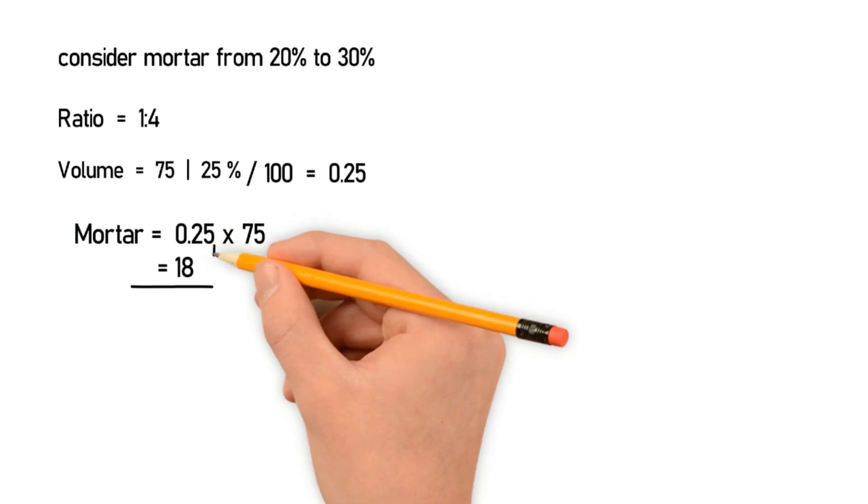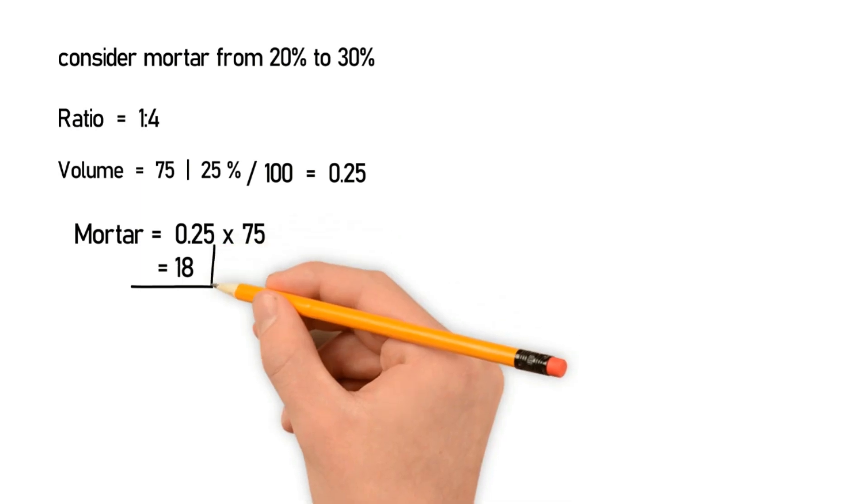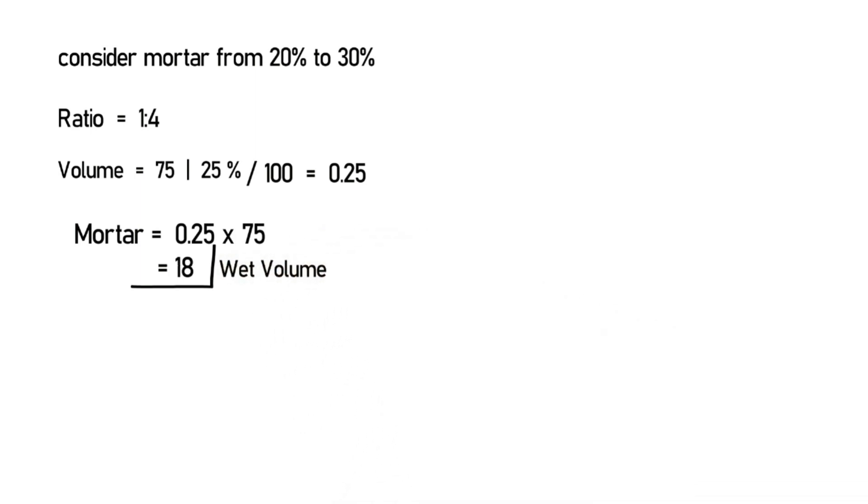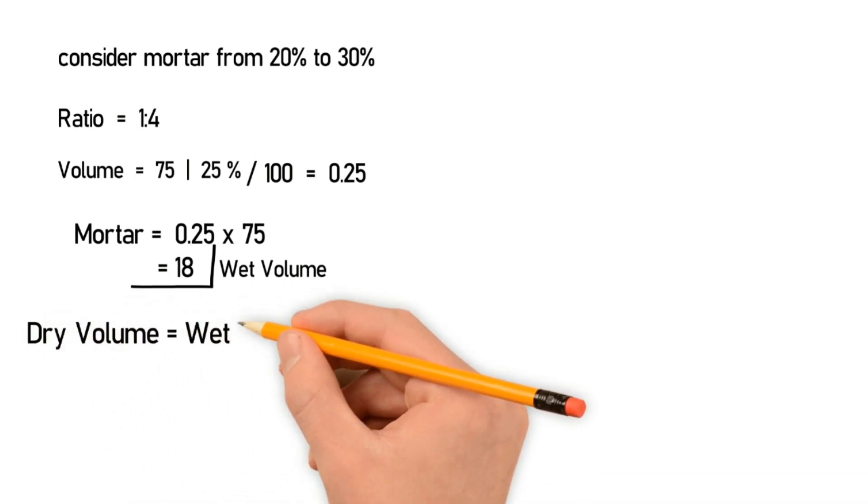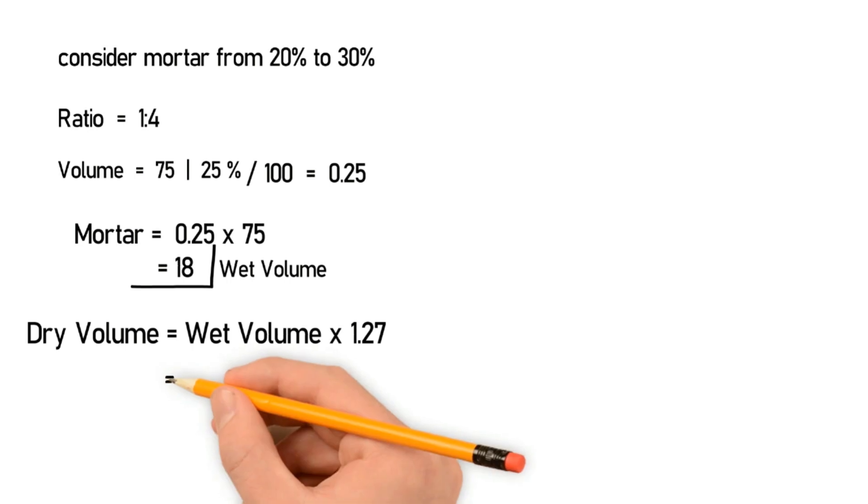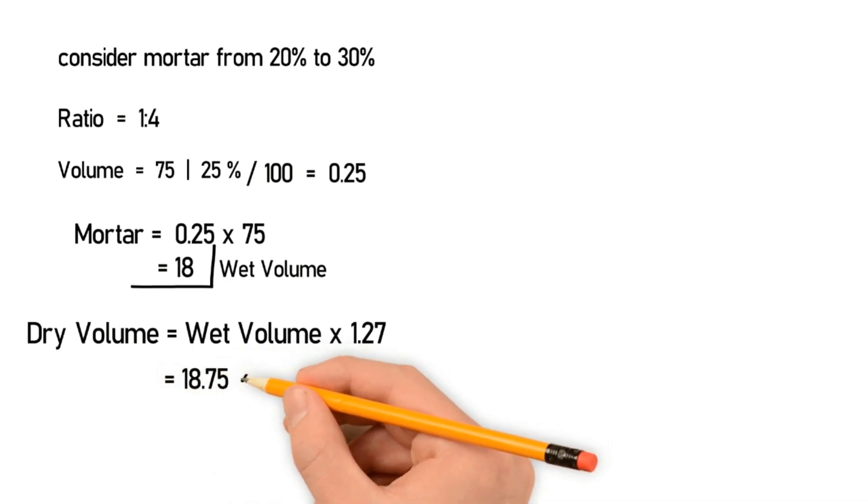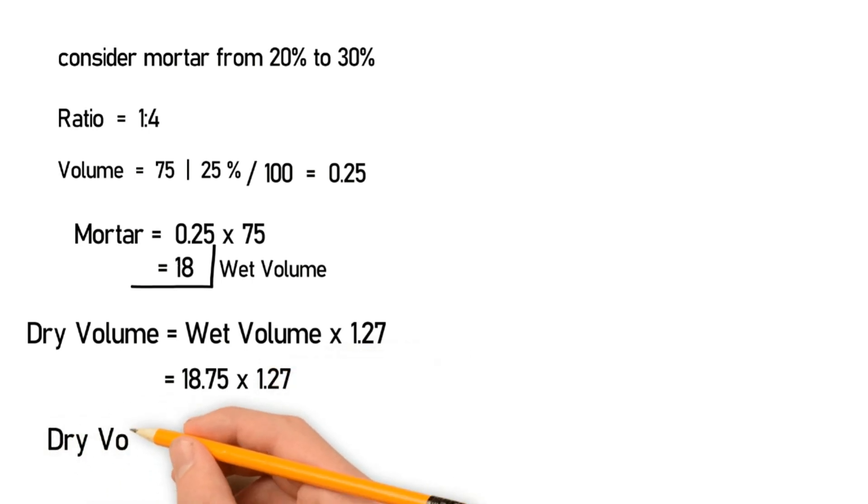So, this is the wet volume, let's convert it into dry volume. In mortar, if you want to convert wet volume to dry volume, you simply multiply it by 1.27. So the formula is: dry volume equals wet volume multiplied by 1.27. Let's put the values and this will become 18.75 multiplied by 1.27, so the dry volume will be 23.81 cubic feet.